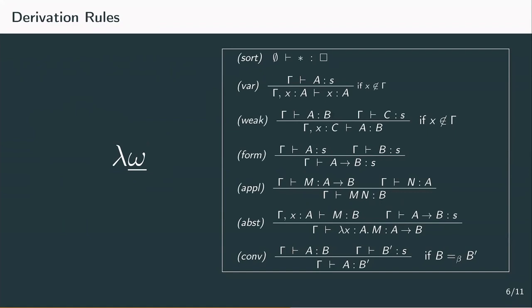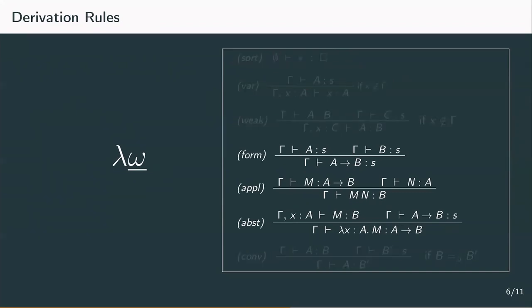The sort rule stays the same. The variable rule doesn't deal with dependent types, so it doesn't need to be adjusted and the same holds for the conversion rule. The only three rules that do contain dependent types and need to be adjusted are the formation, application and abstraction rule.